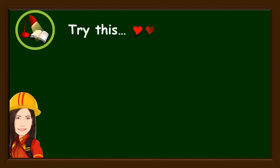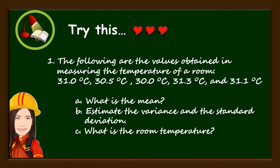Again, as part of learning assessment, here is another activity for you to perform. Number 1. The following are the values obtained in measuring the temperature of a room: 31.0 degrees Celsius, 30.5 degrees Celsius, 30.0 degrees Celsius, 31.3 degrees Celsius, and 31.1 degrees Celsius. What is the mean? Estimate the variance and the standard deviation. What is the room temperature?